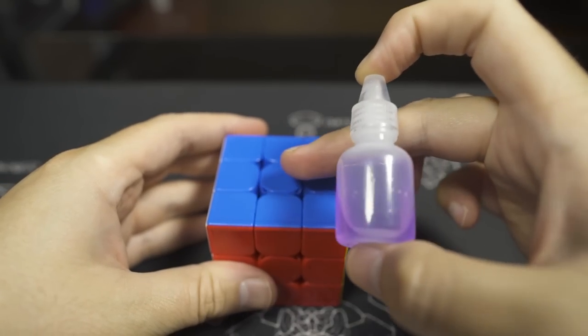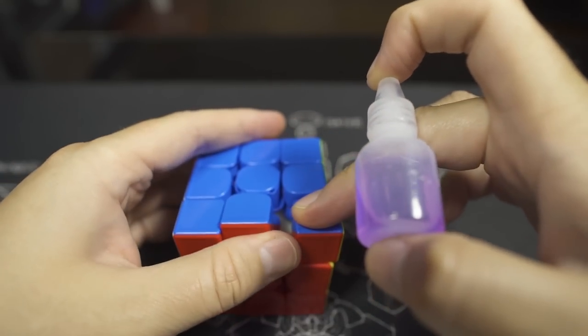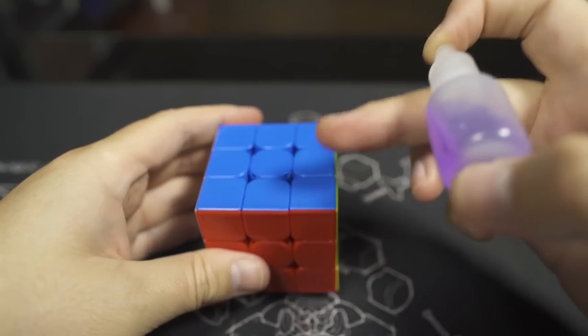If it's not all over the pieces, it won't work. Unlike silicone, where if you put a little bit on the pieces, it'll instantly slow the puzzle down.